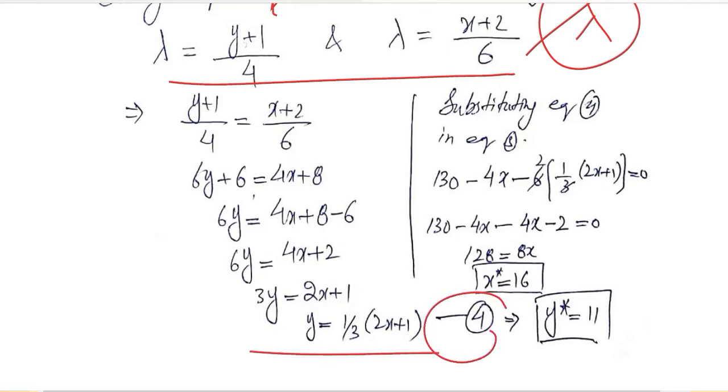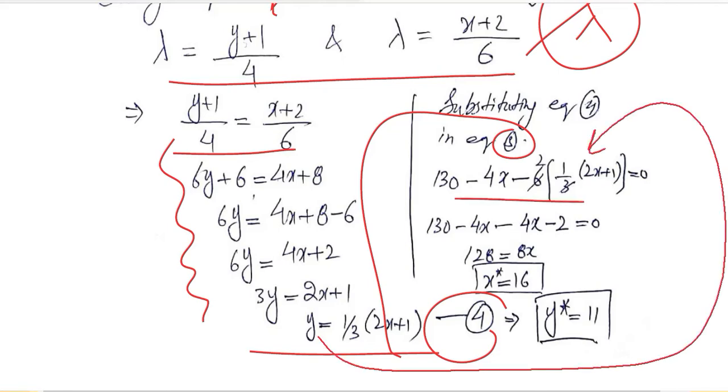We got the equation 4 by equating the two values of lambda and solving it. This is the fourth equation that we can solve with the third equation that didn't have any lambda in it. We have extracted the value of y and substituted in the third equation from the fourth equation.